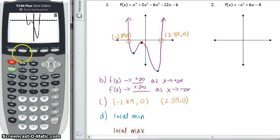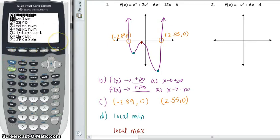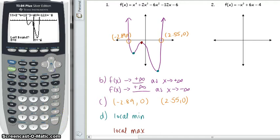So to find that, we go to second, trace, and let's use the minimum feature. So that's our option number three. And this will help us find this point here, our min point that is to the left of our graph, or the furthest left min.